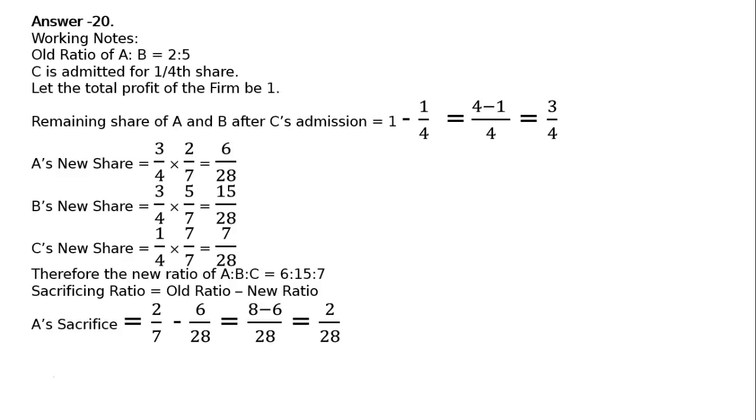A's sacrifice is equal to old share, 2 upon 7 minus new share of A, 6 upon 28. LCM 28, that is 8 minus 6, equal to 2 upon 28.